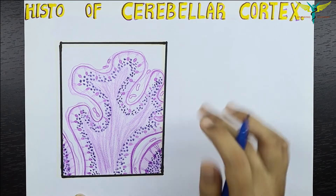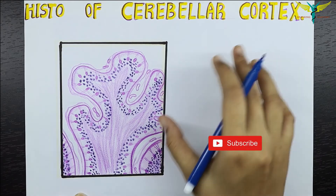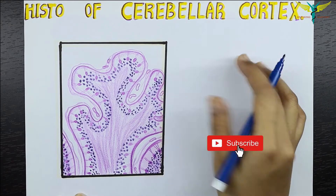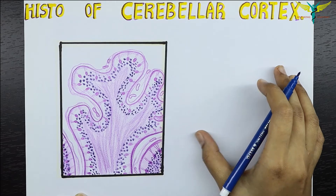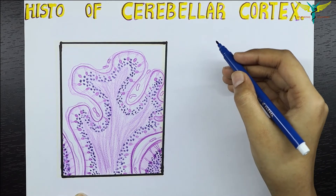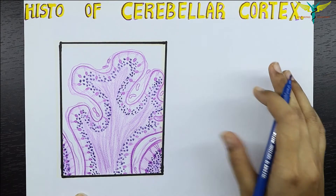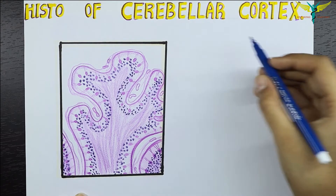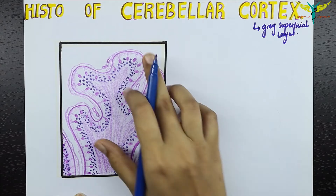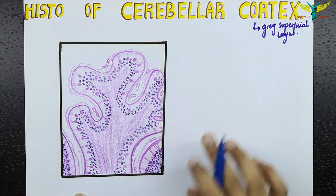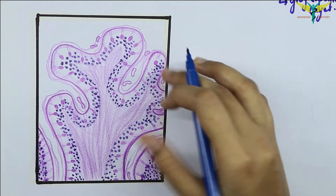In this video, let's learn about the histology of the cerebellar cortex. The cerebellum lies in the posterior cranial fossa, and like the cerebrum, the cerebellum has a superficial layer of gray matter that is called the cerebellar cortex. Now let's talk about the proper histology of the cerebellar cortex.